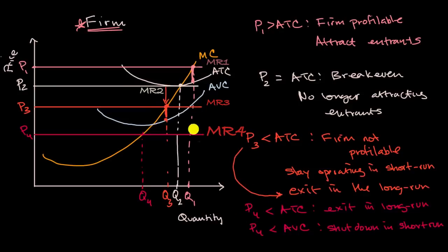But because P sub three is greater than your average variable cost at the rational quantity, you would stay operating in the short run.